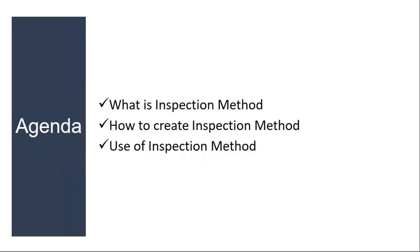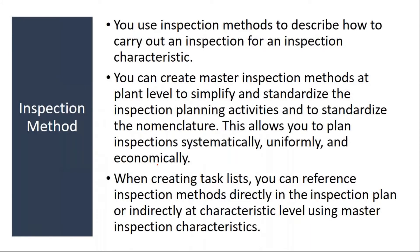The topics we are going to cover: what is an inspection method, how to create an inspection method, and where it is used. You use inspection methods to describe how to carry out an inspection for an inspection characteristic. So far we know what needs to be inspected, what characteristics we need to inspect, and their limits — but how to carry out the inspection activity, that we need to know.